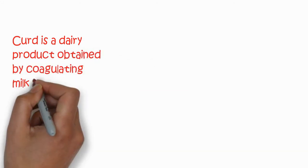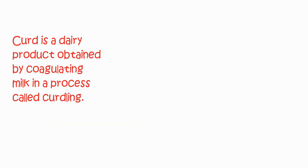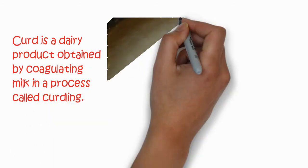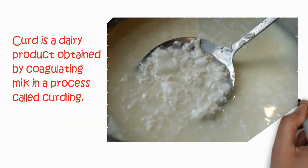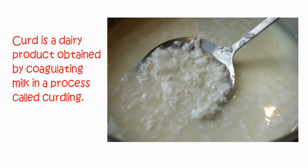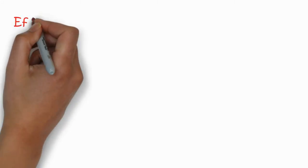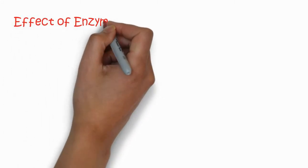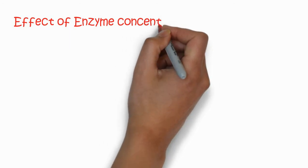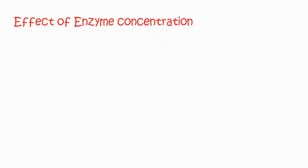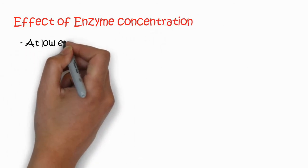The most common example is the curd, which is a dairy product obtained by coagulating milk in a process called curdling. In this case we add some reagent or ingredient and they can change the pH of the milk. This will take place as the specific coagulation of the milk proteins.